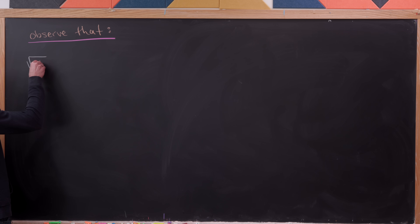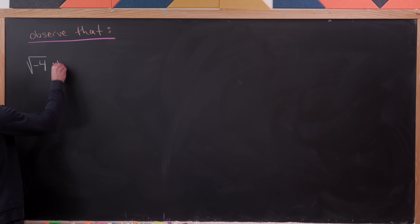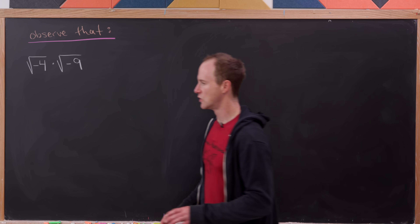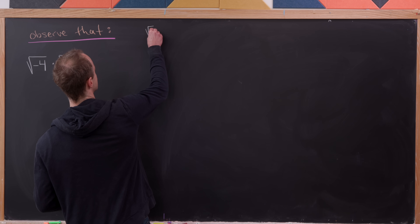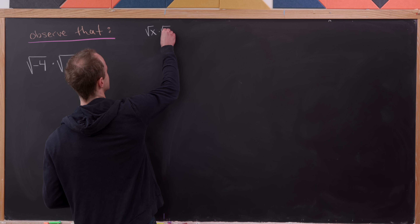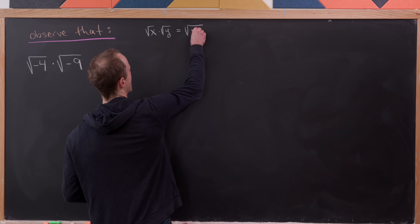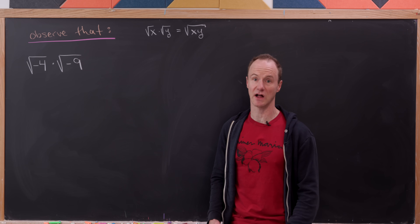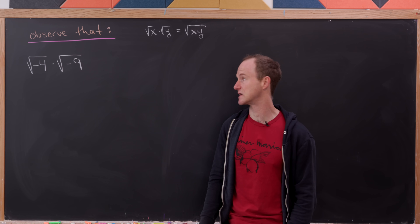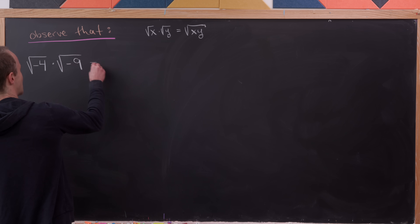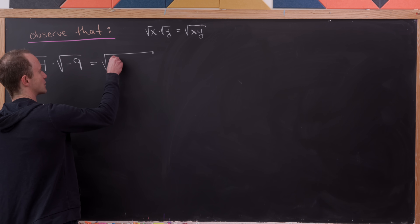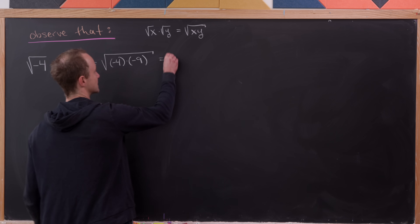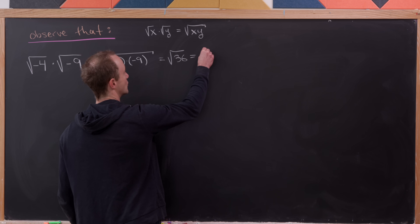Let's say we were to calculate the square root of negative 4 times the square root of negative 9. On the one hand, we know the following rule: the square root of x times the square root of y is equal to the square root of x times y. That's something you probably learned in an Algebra 2 or Algebra 1 class in high school. So that means we should be able to smash these square roots together to give us the square root of negative 4 times negative 9 — in other words, the square root of 36, which is 6.